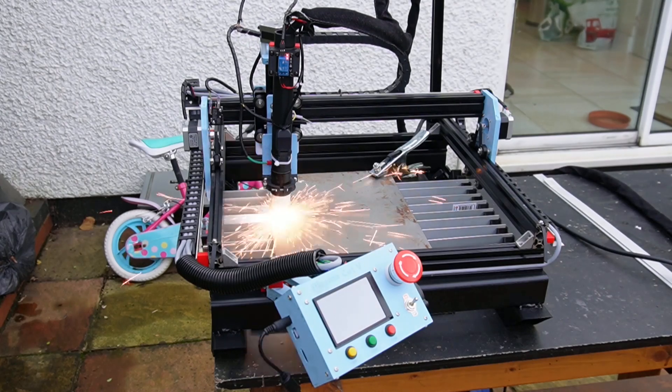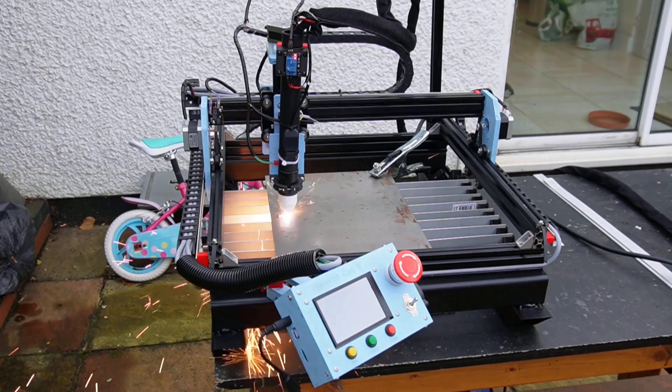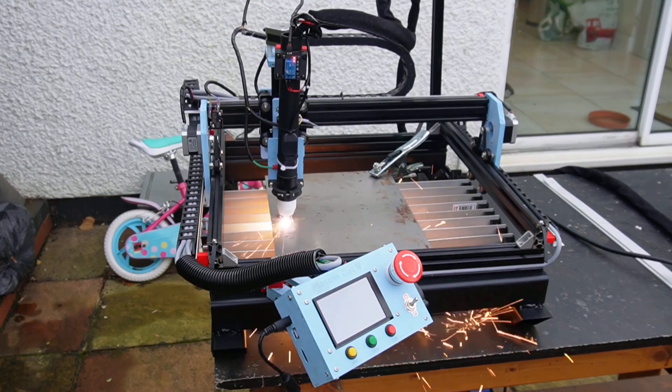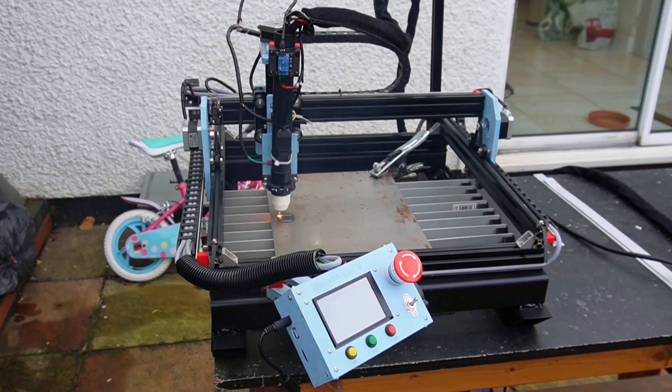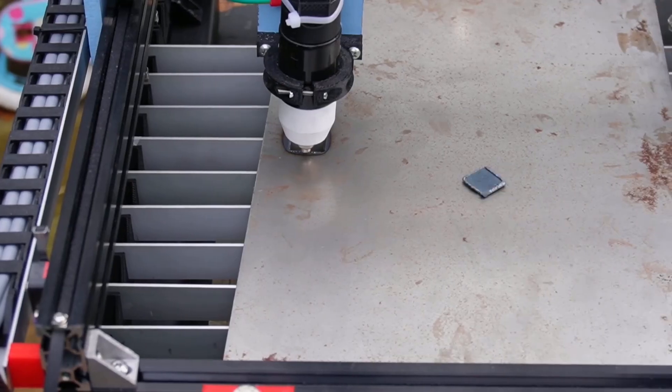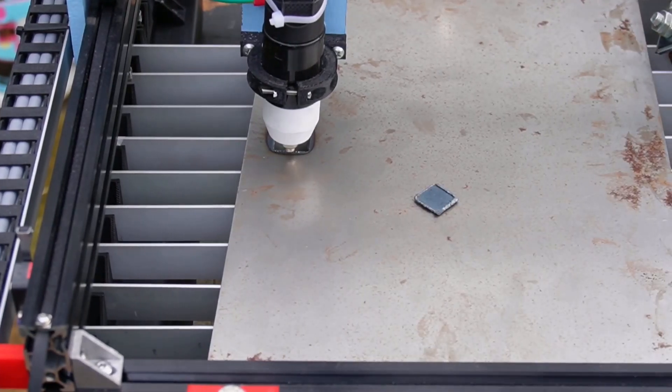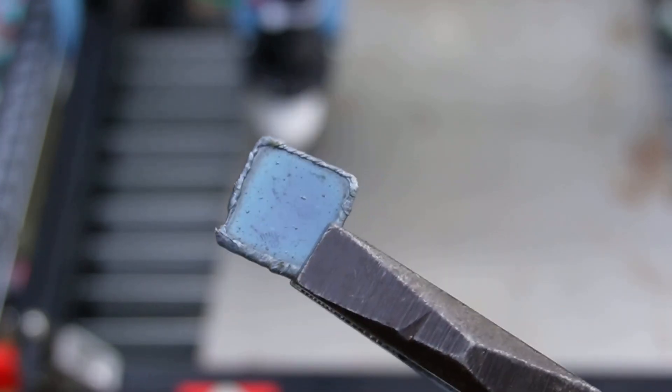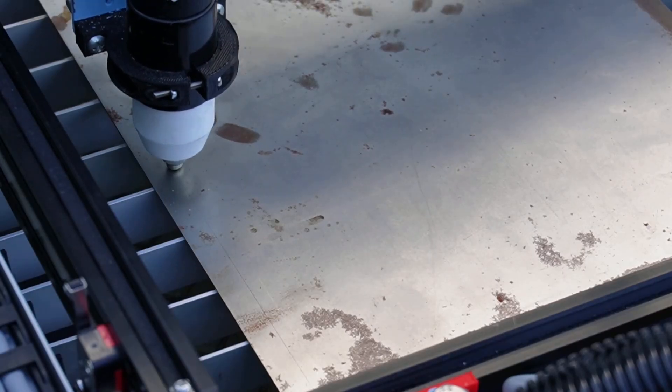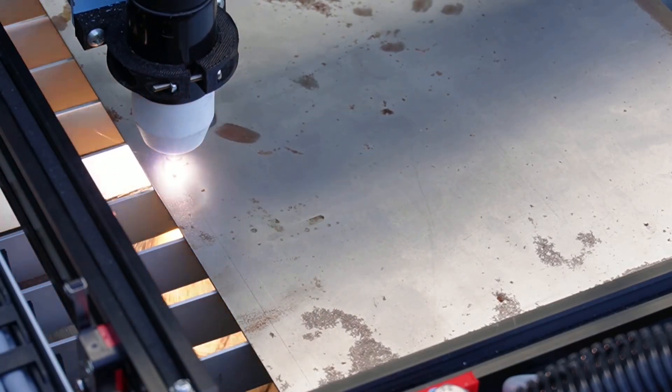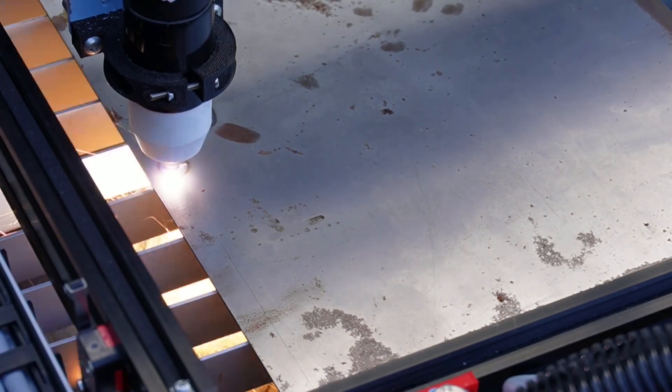Here's the first run. This was a 20 by 20 calibration square, and it turned out okay to dimension. Obviously, there's some fine tuning needed. Once the square was done, it was time to try something a bit more complex.